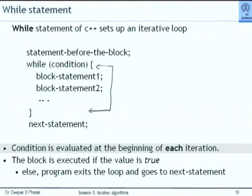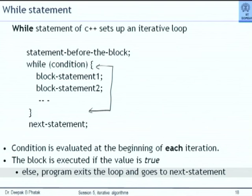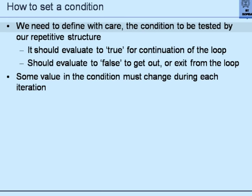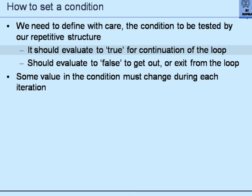When the condition becomes false, get out and go to the next statement. The condition is evaluated at the beginning of each iteration; the block is executed if the value is true, else the program exits the loop. You have to be careful when setting the condition because it is tested every time the repetitive block is to be executed. It should evaluate to true for continuation of the loop, and if it evaluates to false, execution exits the loop.